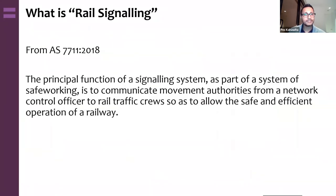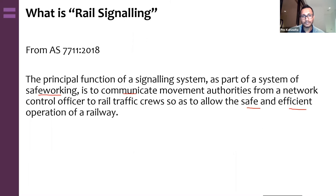So, what is rail signaling? As taken from the Australian standard on rail signaling and principles: the principal function of a signaling system as part of a system of safe working is to communicate movement authorities from a network control officer to rail traffic crews, so as to allow the safe and efficient operation of the railway. Key words here are 'safe working,' 'communicating,' and 'safe and efficient' — the two major functions delivered through the control officer and safe working methods.